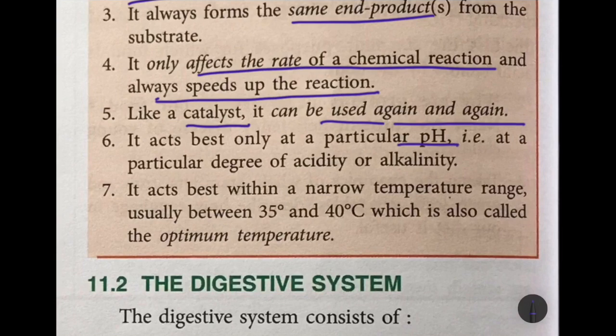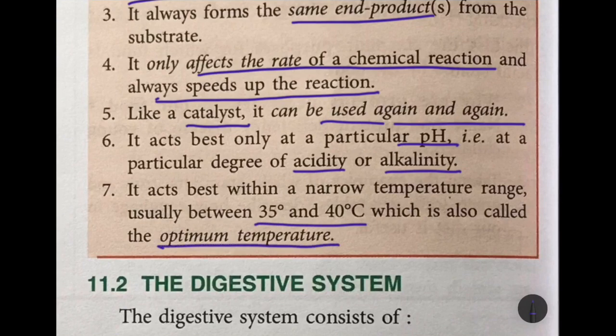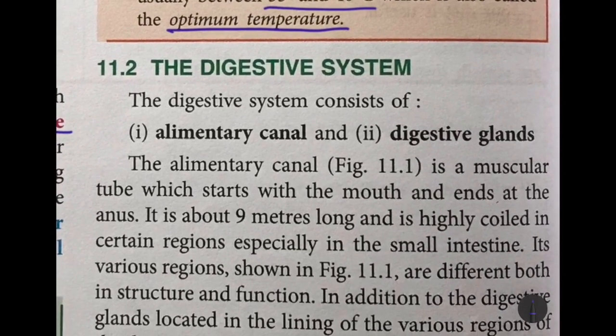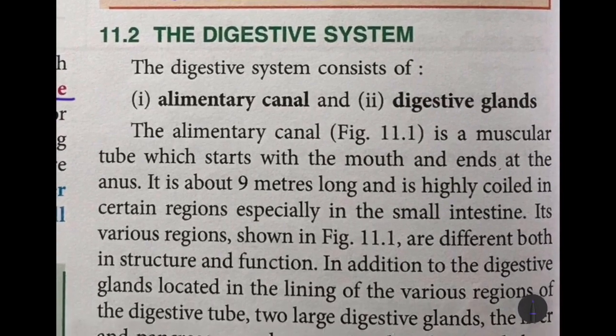An enzyme acts best at a particular pH — that is, the environment where it acts should be either acidic or alkaline. It also acts best within a narrow range of temperature, which is body temperature between 35°C and 40°C, also known as the optimum temperature.